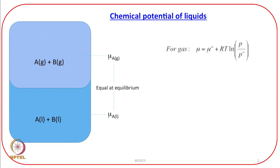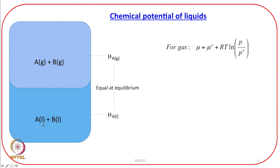Let us now recall the definition of chemical potential of a perfect gas. This is the equation we derived earlier: for a perfect gas, μ = μ° + RT log(P/P°), where P is the pressure. Since different phases of the same substance — for example, A in liquid form — will have chemical potential equal to that for A in vapor form at equilibrium.